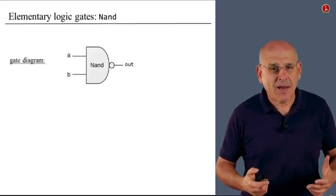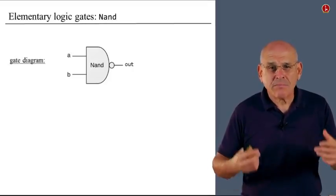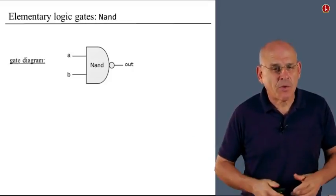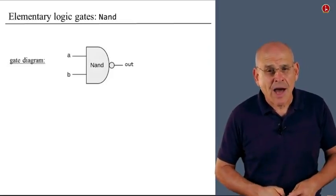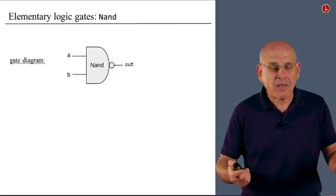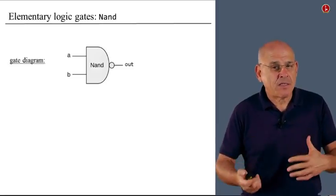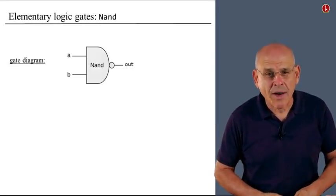Here's the definition of a NAND. This is actually the standard diagram that we use to describe a NAND gate. It has two inputs and a single output. Everything here is binary, so a, b, and out are either 0 or 1.